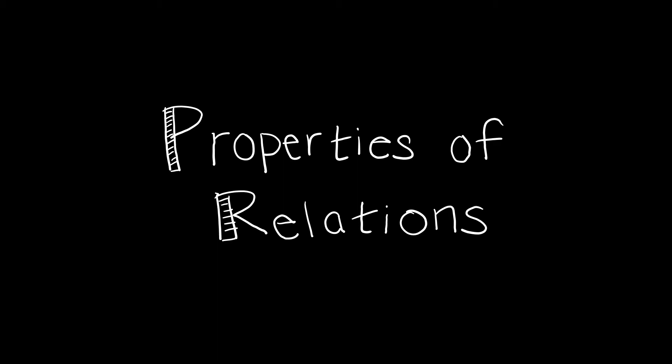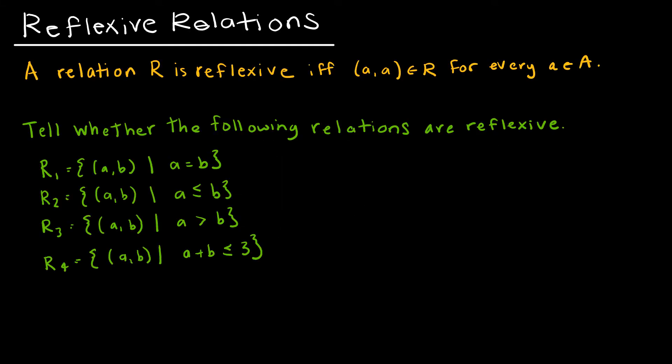We just reviewed what a relation is, and now I want to explore the properties of relations. The first property is the reflexive property. A reflexive relation is a relation where (A, A) is in the relation — essentially the x and y values will equal one another for all of the A's.